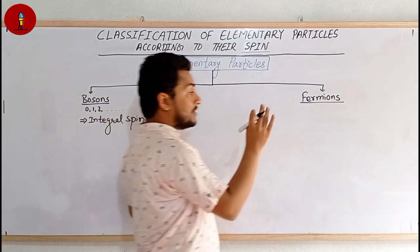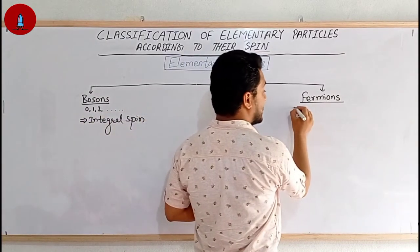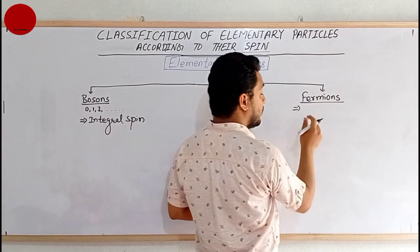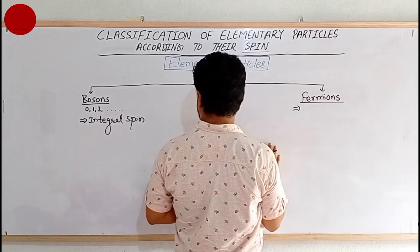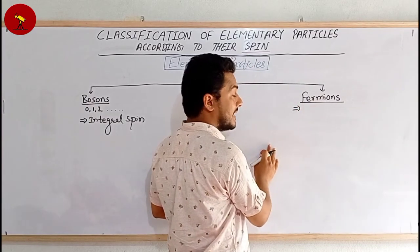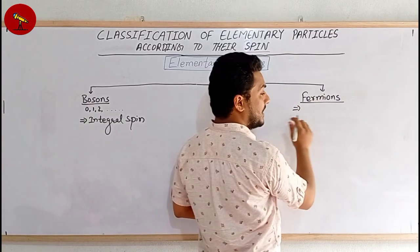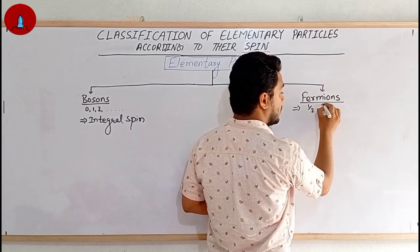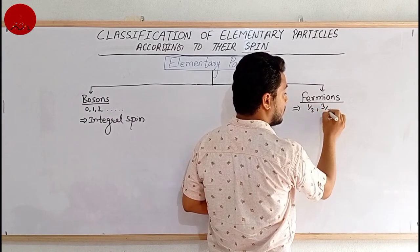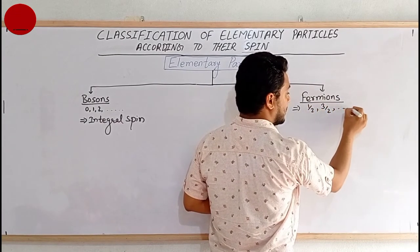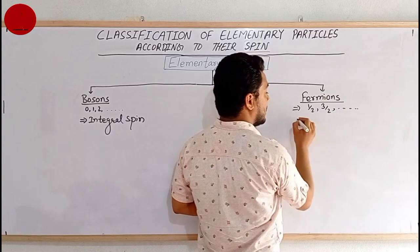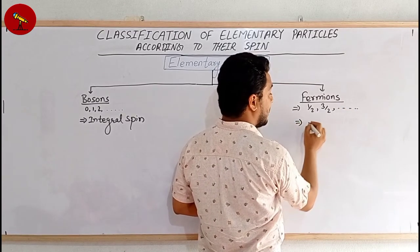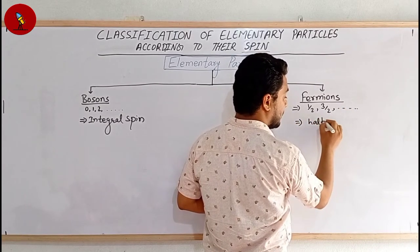Fermions are such subatomic particles which do not have integral spin — they have half-integral spin, like 1/2, 3/2, and so on. Such a type of spin is called half-integral spin.